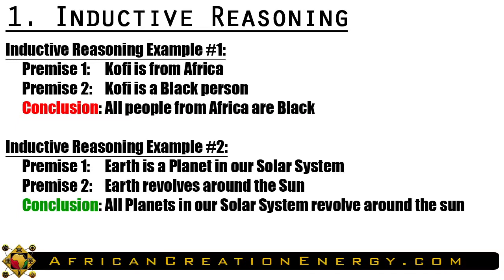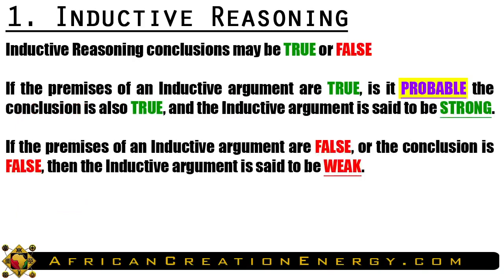A second example of inductive reasoning. Premise one: Earth is a planet in our solar system. Premise two: Earth revolves around the sun. Therefore, all planets in our solar system revolve around the sun. In this example, we've used the specific observation that Earth revolves around the sun to arrive at a general conclusion. The consequence of inductive reasoning may or may not be true. Because of this, an inductive argument is said to be either strong or weak.